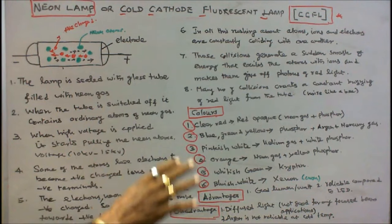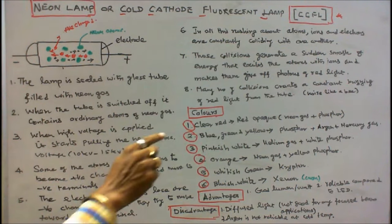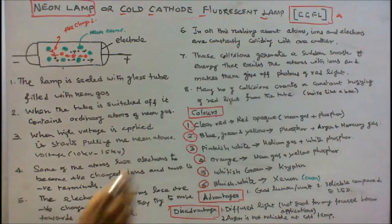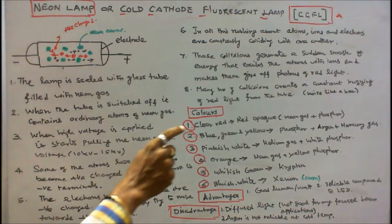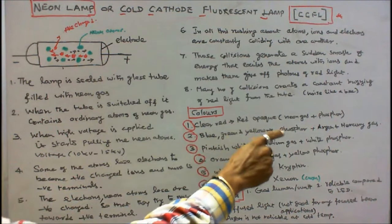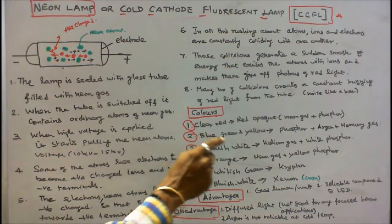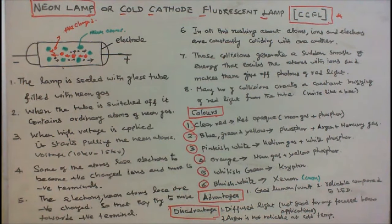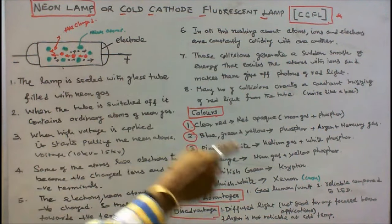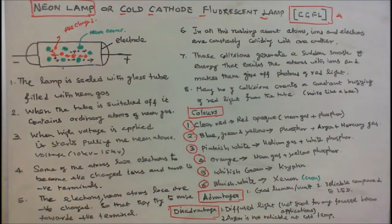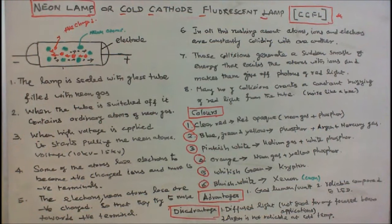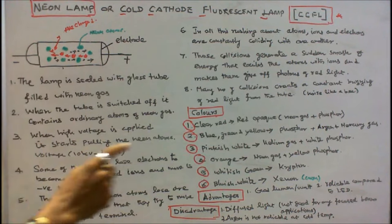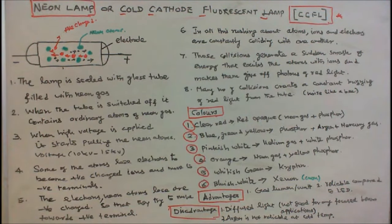Different colors can be obtained from the neon lamp. Number one: clear red or pink — neon plus phosphor. Number two: blue, green, yellow — using phosphor plus argon plus mercury gas. Number three: pinkish white — using helium gas plus white phosphor. Number four: orange — neon gas plus yellow phosphor. Number five: whitish green — using krypton instead of neon. Number six: bluish white — using xenon instead of neon. These are all the colors obtainable by combining neon or other gases with various phosphors.